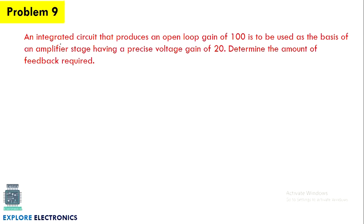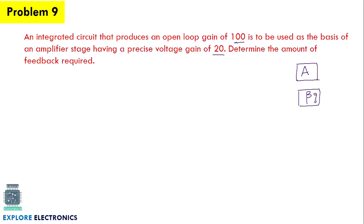An integrated circuit that produces an open loop gain of 100 is to be used as a basis of an amplifier stage having a precise voltage gain of 20. We need to determine the amount of feedback required. There is an amplifier circuit with a feedback network having a feedback ratio beta. We need to calculate beta given the amplifier gain as 100.